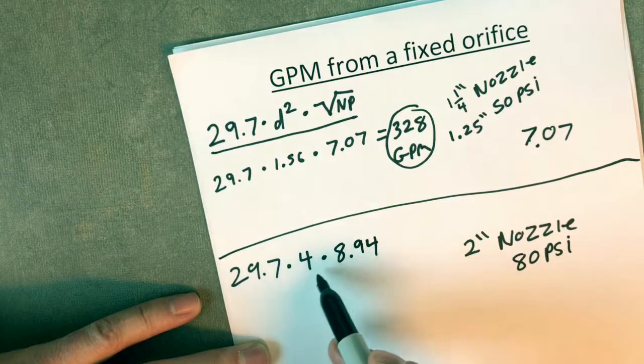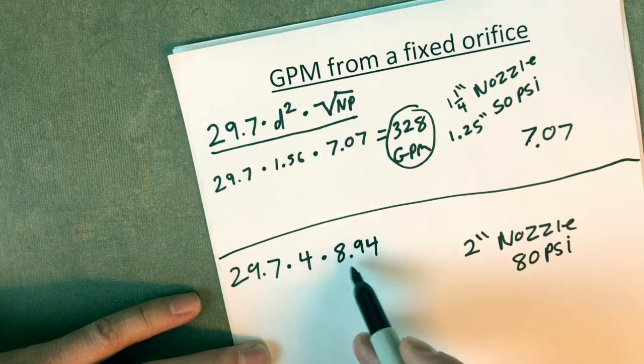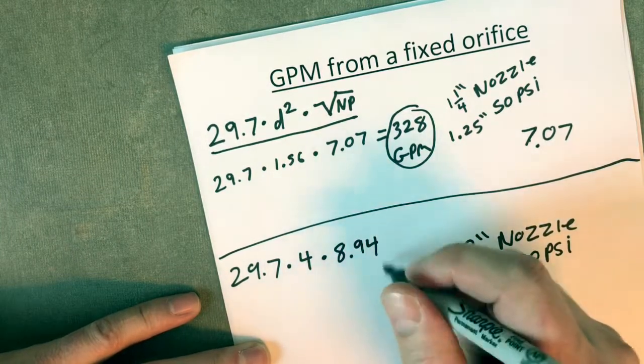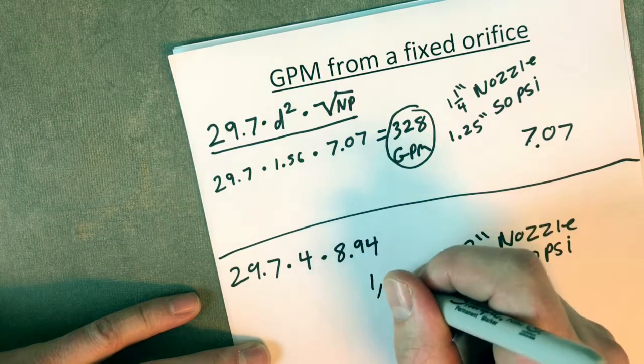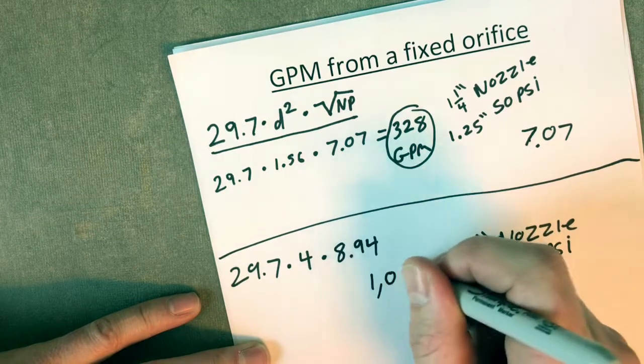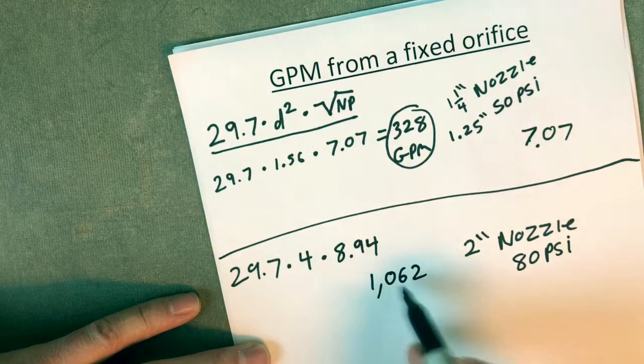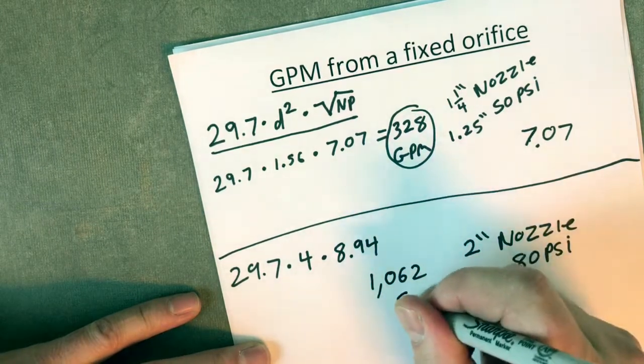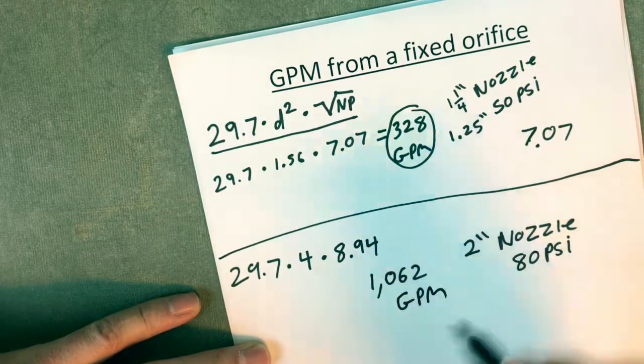29.7 times 4 times 8.94. If you calculate that out, it's 1062 GPM.